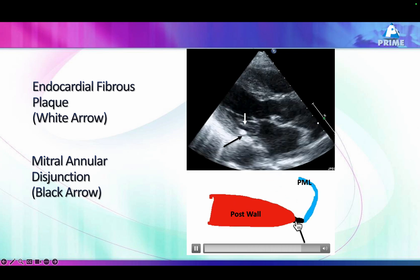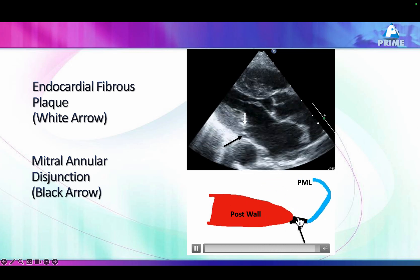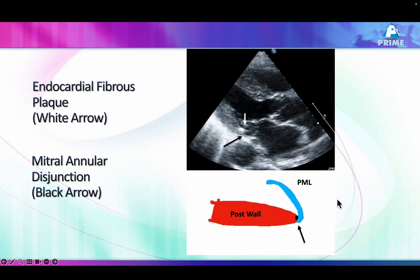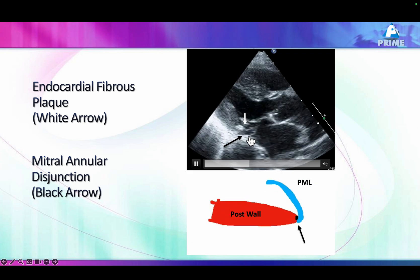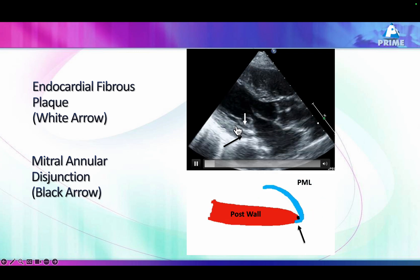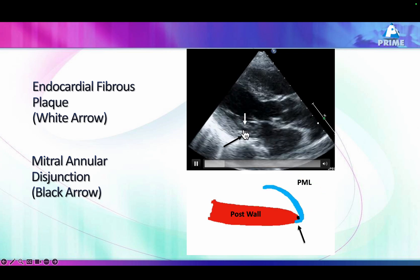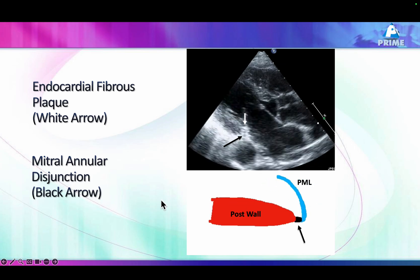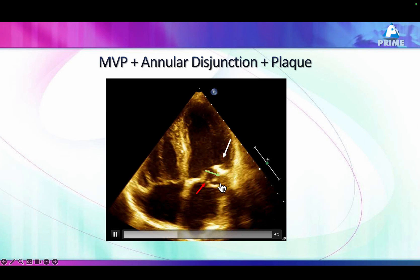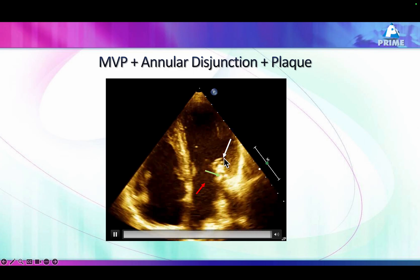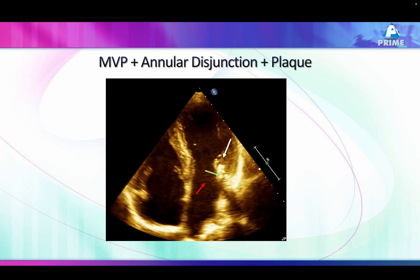The fibrous tissue between the attachment of the mitral valve and the posterior wall gets stretched as the mitral valve goes into the left atrium during prolapse. The mitral valve going into the left atrium creates a separation between the ventricular wall and the annulus — this separation is called annular disjunction. You sometimes see fibrotic plaques in that area. Notice the lateral wall of the ventricle has a plaque and thickening — this is a patient of arrhythmogenic mitral valve prolapse.